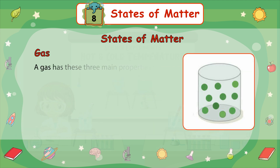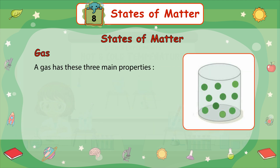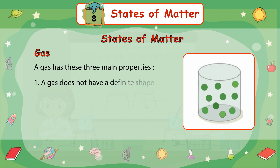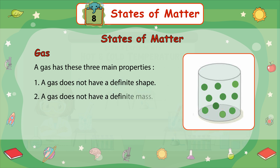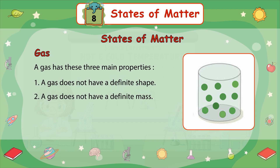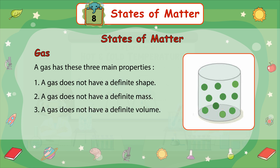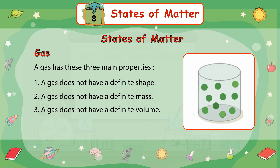A gas has three main properties. Number 1: a gas does not have a definite shape. Number 2: a gas does not have a definite mass. Number 3: a gas does not have a definite volume.